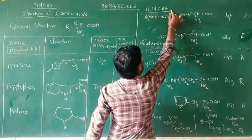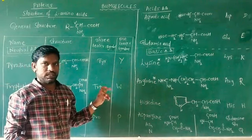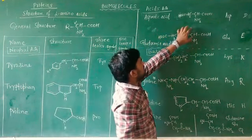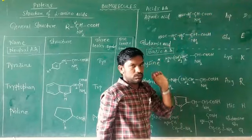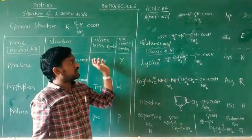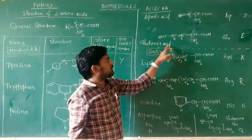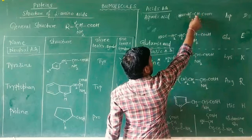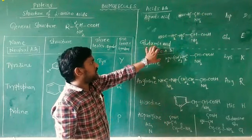Now, acidic amino acids. Amino acids are bifunctional with NH2 and COOH, but acidic amino acids have more COOH groups compared to NH2 groups. There is one NH2 (basic) group but two acidic groups, making it acidic. The suffix 'acid' in the name indicates these are acidic amino acids — for example, aspartic acid and glutamic acid.